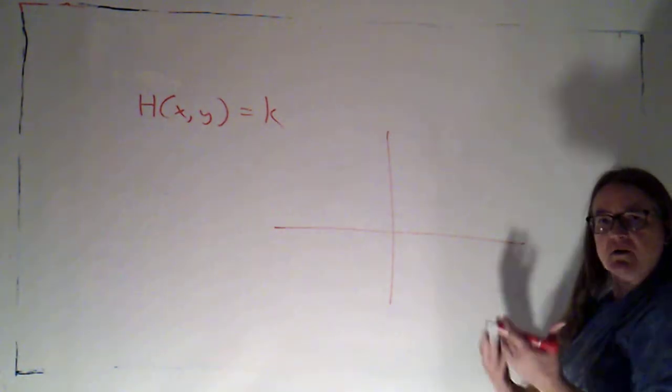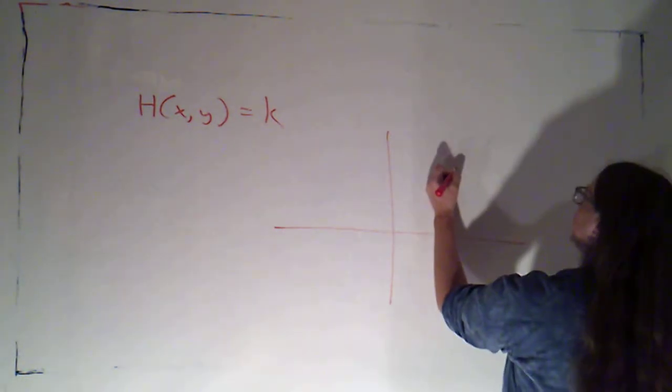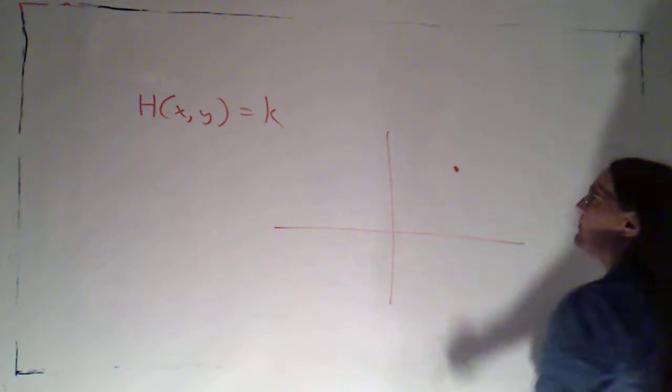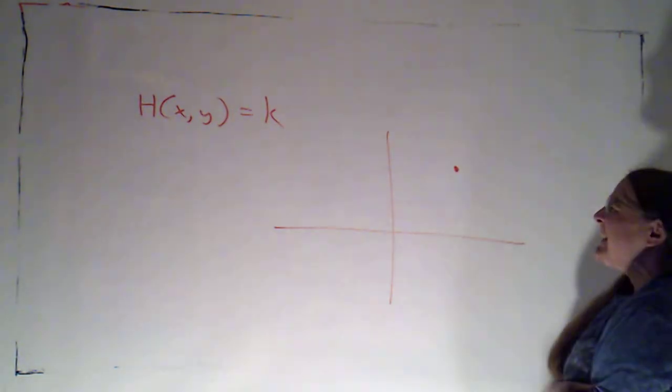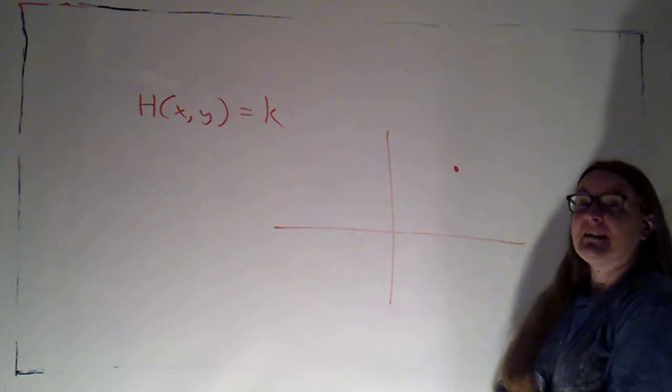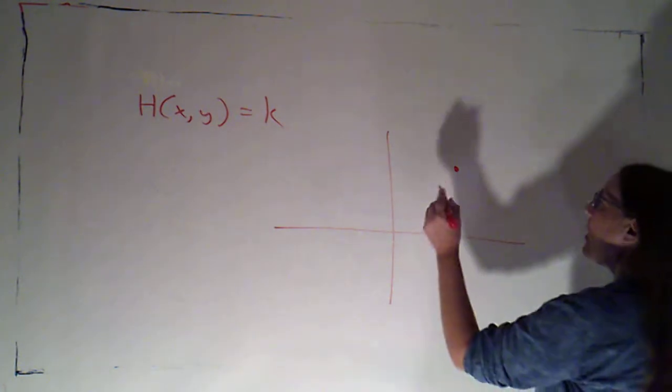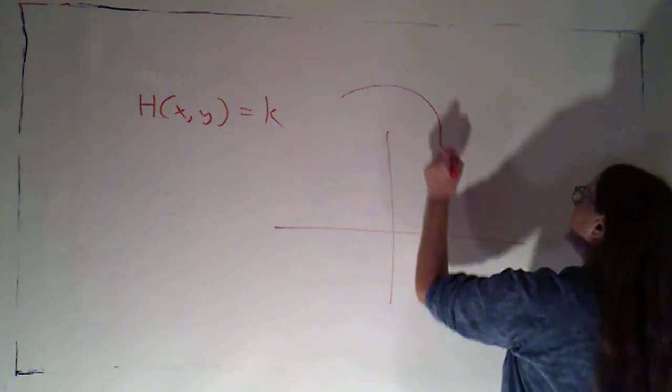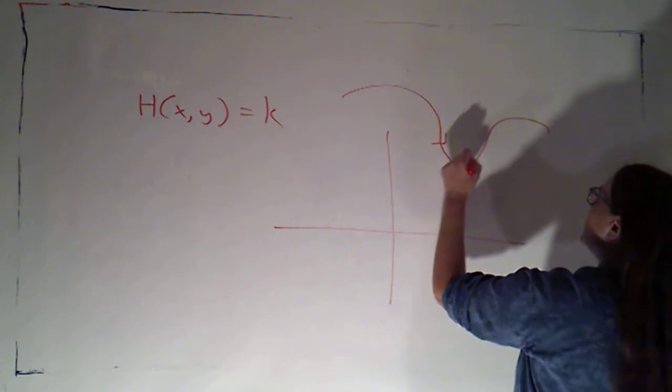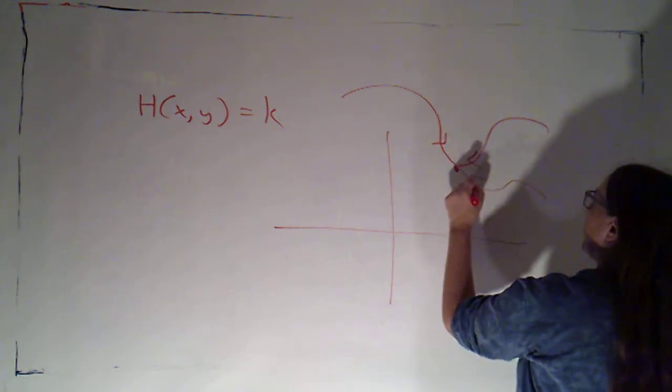So let's just suppose that I do have a Hamiltonian system and I've got an equilibrium point here. And let's just suppose it was a sink so that all of the solutions around it would be approaching that point.